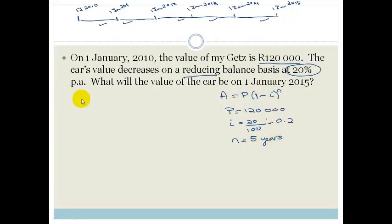So we can substitute into this equation. A is equal to P times 1 minus I all to the power of N. P is your principal of 120,000. So it's going to be 1 minus your interest, which is 0.2 all to the power of 5, which is going to be 120,000 times 0.8 to the power of 5.